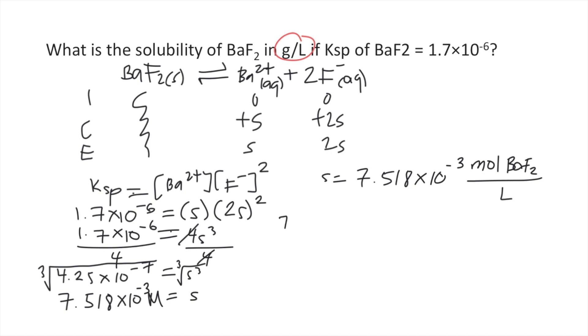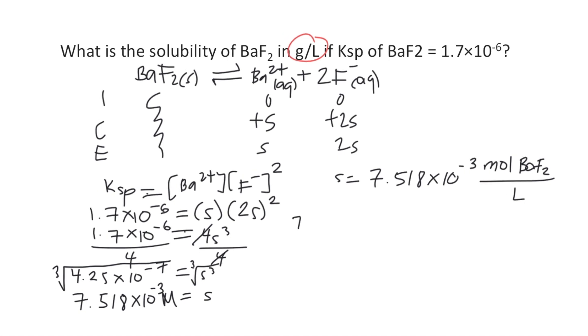Let's just copy our molar solubility again. That is 7.518 times 10 to the negative 3 moles per liter. So we need the molar mass. We multiply it by the molar mass of BaF2. If you solve the molar mass of BaF2, that is equal to 175.32, around that number.